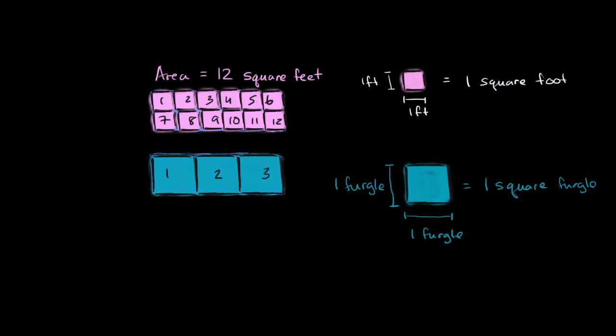The area of this figure in square fergals, area is equal to three square fergals. So it's the same exact area. Three square fergals is equal to 12 square feet, covering the exact same area. Now what I encourage you to think about is, how many square feet make a square fergal?